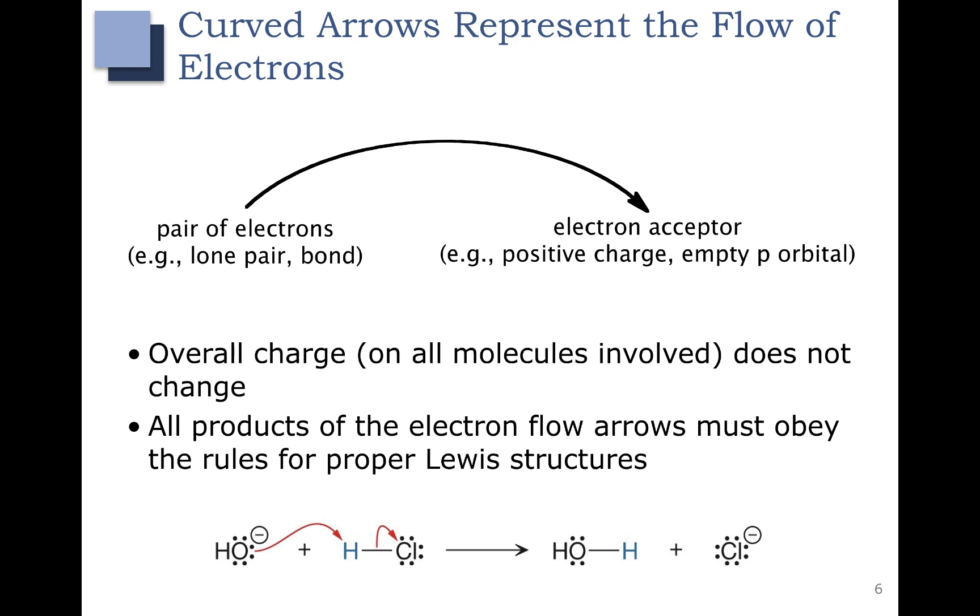As we just covered, we can use curved arrows to show hydroxide forming a bond to HCl, and then the HCl bond breaking, and those electrons are going to Cl-. Let's do our check to make sure that we follow these two rules. Notice the overall charge is the same. On the left, we have a negative one charge. On the right, we have a negative one charge. So we followed that first rule, overall charge on all molecules involved does not change.